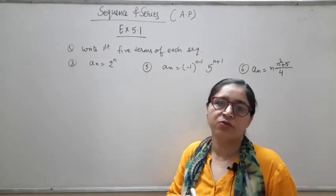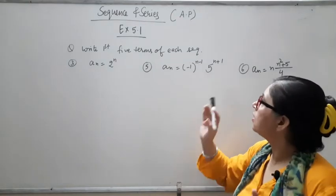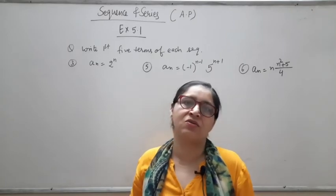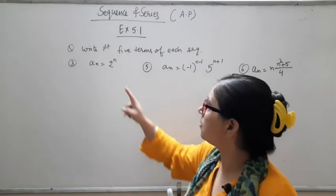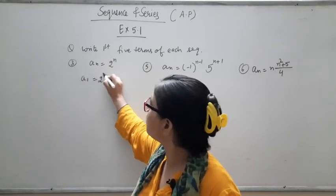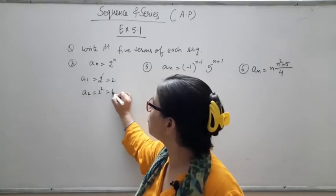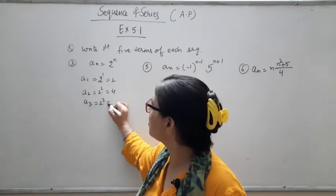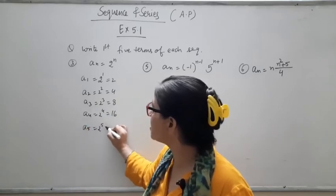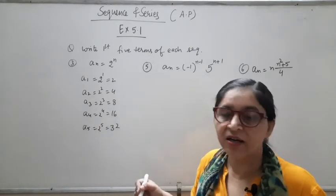Now starting the sums of Exercise 5.1. In question 3, the nth term is given as An = 2^N. So A1 = 2^1 = 2; A2 = 2^2 = 4; A3 = 2^3 = 8; A4 = 2^4 = 16; A5 = 2^5 = 32. The first 5 terms of the sequence are 2, 4, 8, 16, 32.